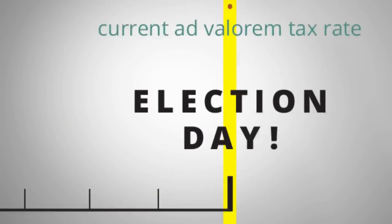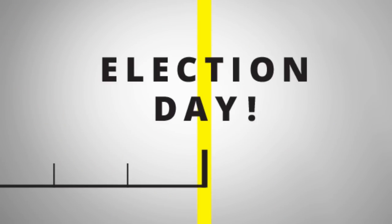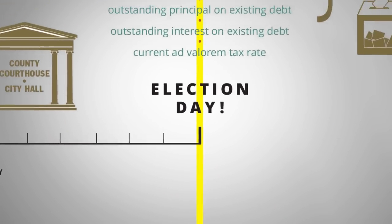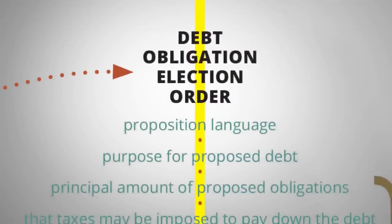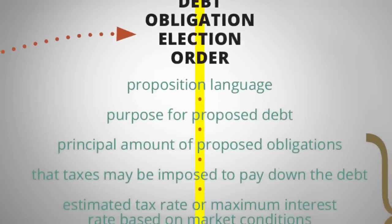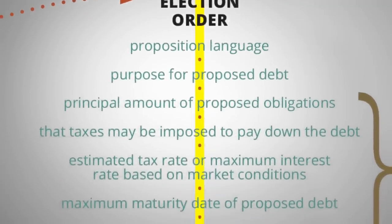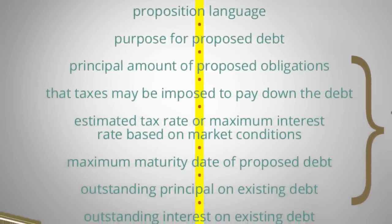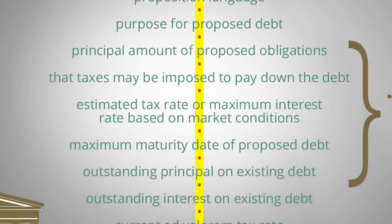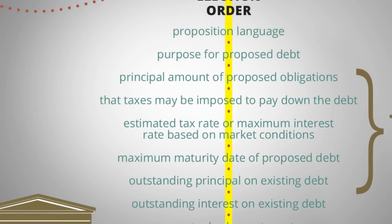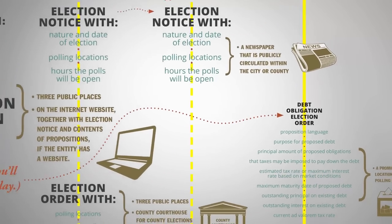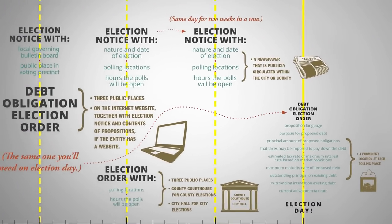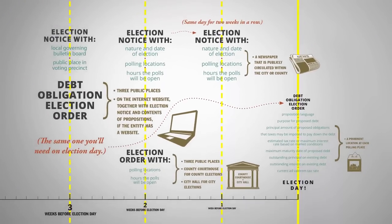Let's start at the end. By Election Day, the governing entity should have provided the following information in a prominent place at each polling location: the proposition language, the purpose of the proposed debt, and starting in spring of 2014, outstanding principal and interest on existing debt. Essentially, this information tells you how much the entity owes in outstanding debt and interest and the purposes for which the debt was incurred.